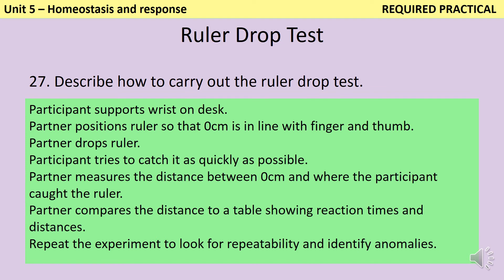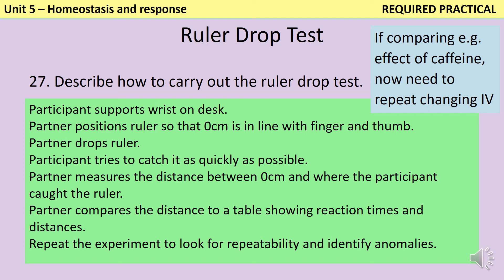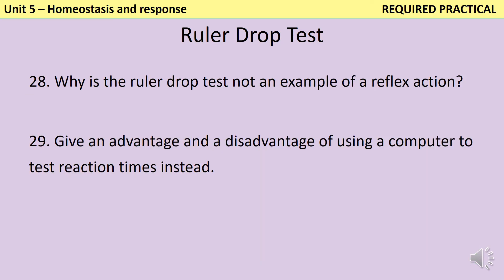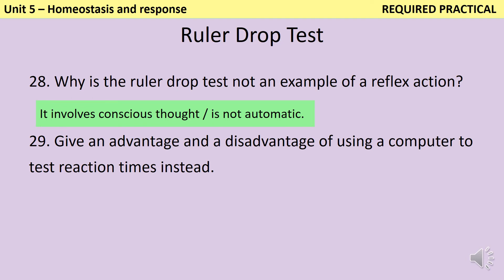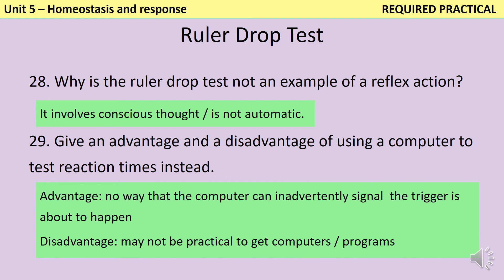If you're using the ruler drop test to investigate something like the impact of caffeine or classical music on reaction time, you would need to do the test again having changed the independent variable. This could be the same people doing the test once and then again after drinking coffee, or you could have two separate groups — one who drank water and one who drank a caffeinated beverage. The ruler drop test isn't a reflex because it involves conscious thought, so it's not automatic. Using a computer instead removes the possibility that the person administering the test might give away that they're about to drop the ruler, though it may not be practical due to cost or software availability.